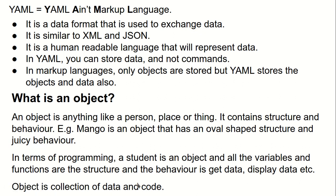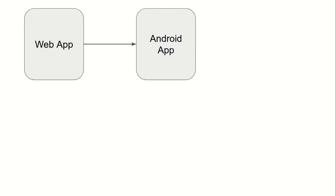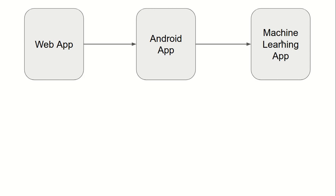Now let's say here is a web application that is trying to send data to an Android application, and the Android application is also trying to send data to a machine learning model. In this way three devices are sending the same data between each other. The question arises: is there any way that one file with a single format can be used to transfer data between multiple devices?